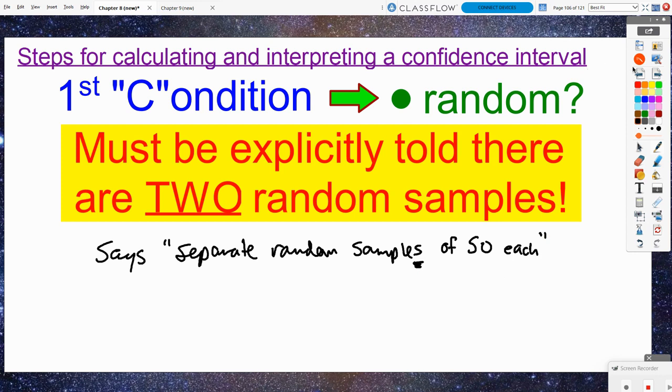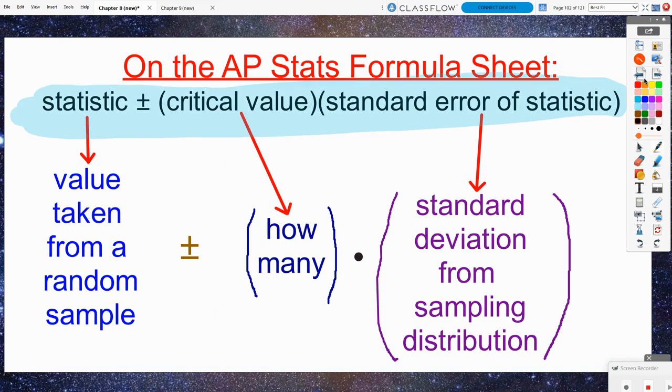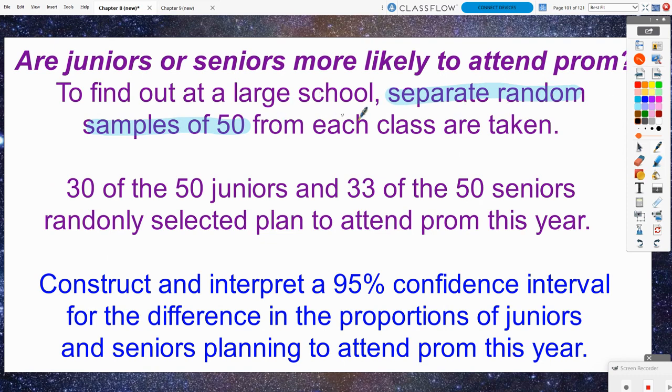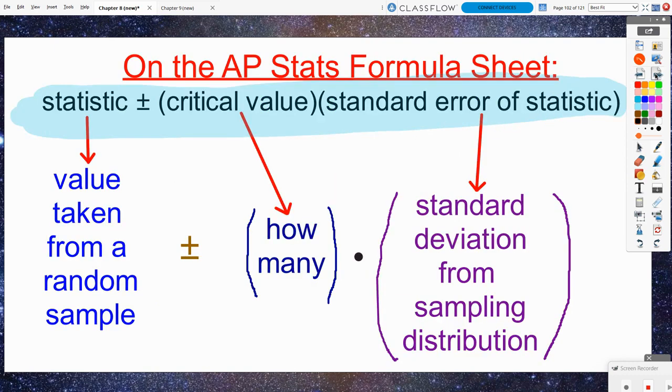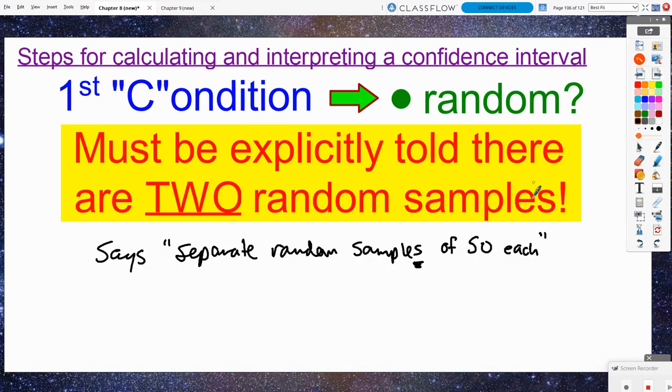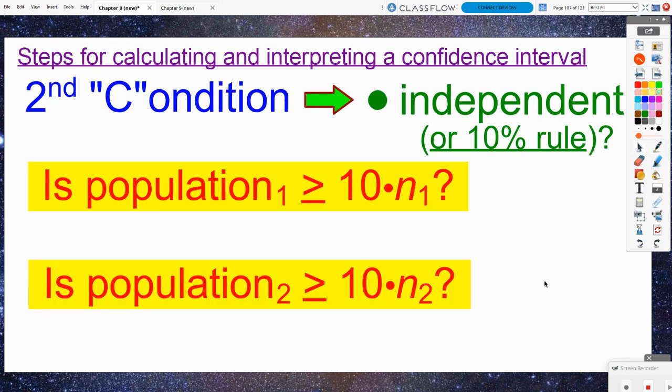Separate random samples and this has to be from two random samples. Notice I'm making sure that I don't just say random sample, but I'm classifying that these are really two samples here. Separate random samples of 50 from each class. That's exactly what the problem said. I'm good with the random condition.